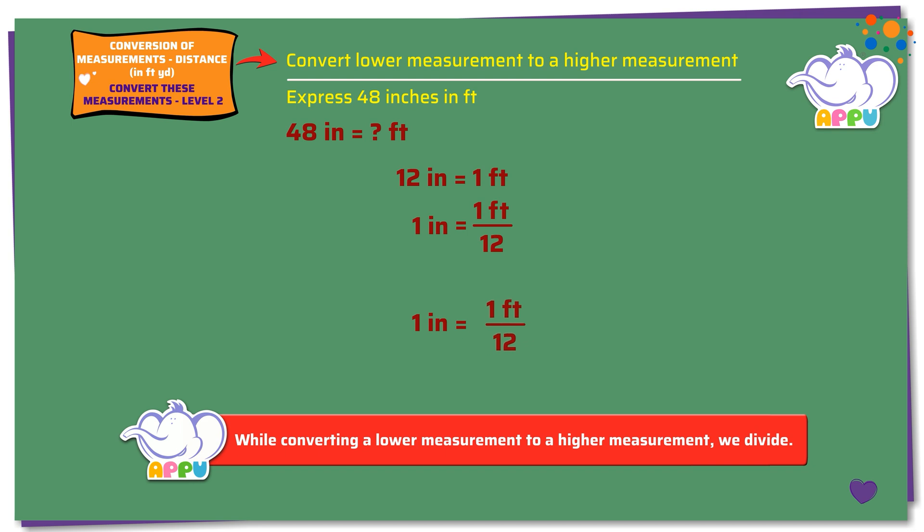Multiplying both sides by 48, we get 48 times 1 inch equals 48 times 1 foot by 12. 48 times 1 inch equals 48 inches.